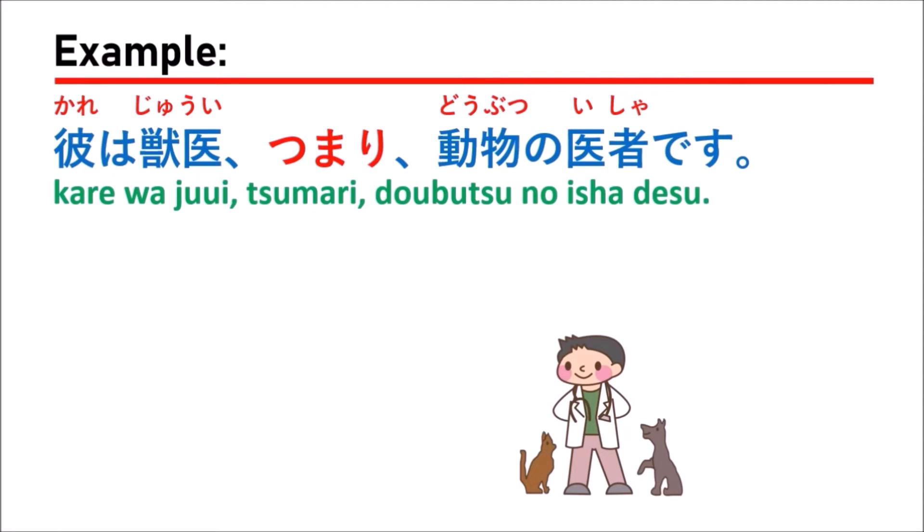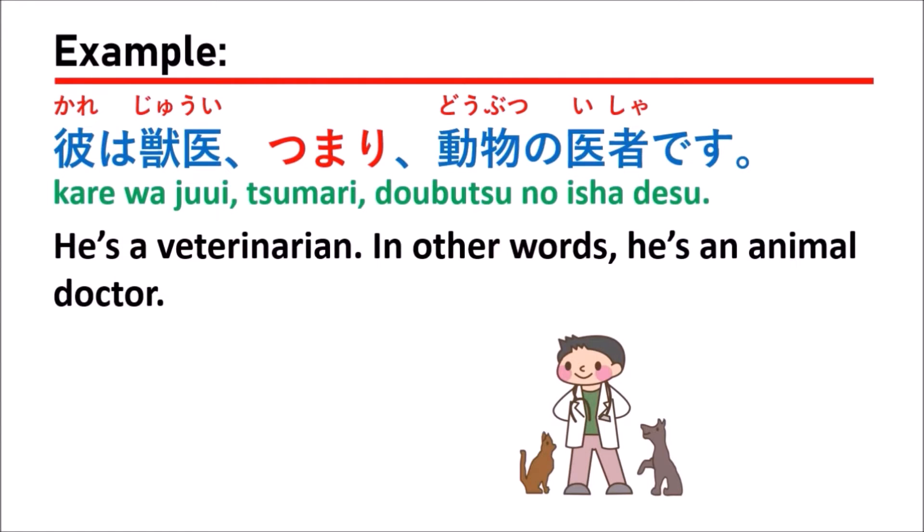Our example sentence is: 彼は獣医、つまり動物の医者です。 Which means: he is a veterinarian. In other words, he is an animal doctor. You can also say: he is a veterinarian — in short, or in summary — he is an animal doctor.